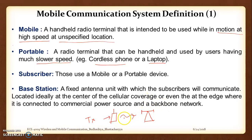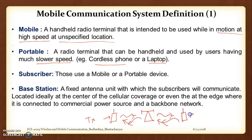The base station takes the signal from a transmitter and redirects it to the receiver. We will discuss forward and reverse channels later. Since it is a two-way communication, the receiver can also send back to the transmitter using the same base station. The base station is mostly located at the center of the cell — which is a theoretical assumption — but it may also be located at the edges of the cell.